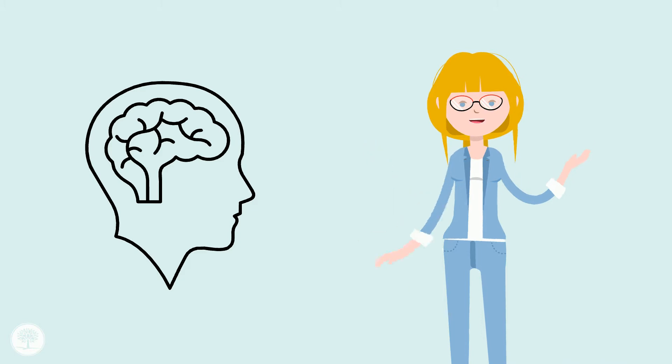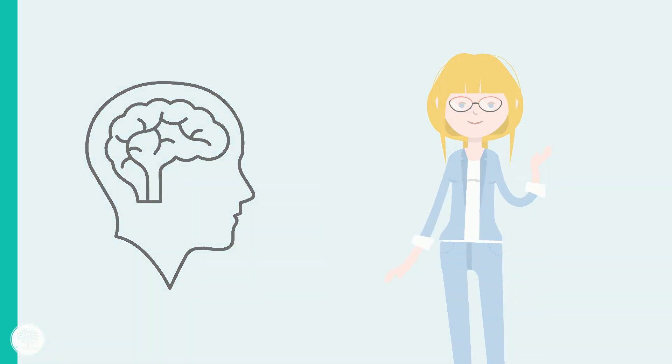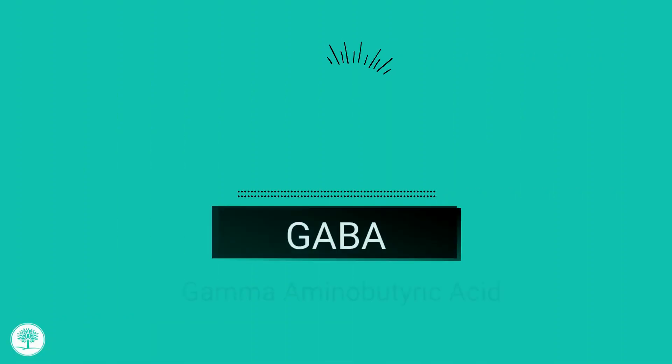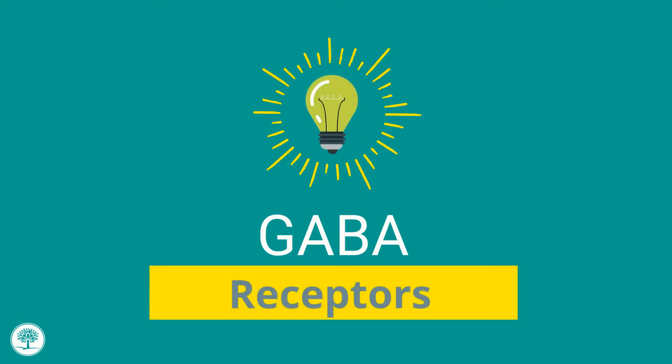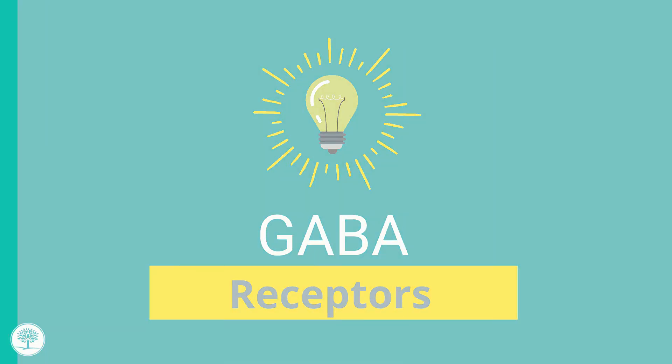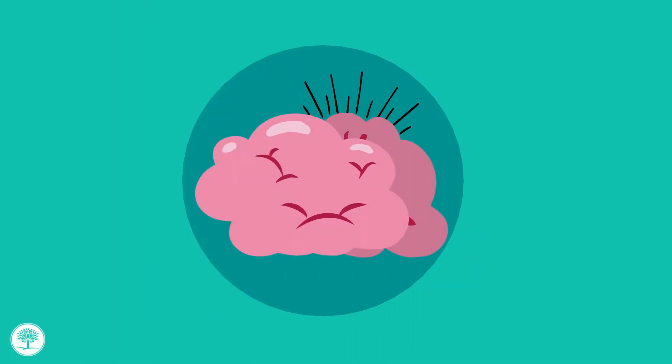Ethanol decreases activity of a neurochemical in our brains called GABA. GABA stands for gamma-aminobutyric acid, a big word, so we just use the abbreviation GABA. When you activate the GABA receptors, it is like turning off a light switch. When GABA receptors are activated, they decrease the activity of the brain.